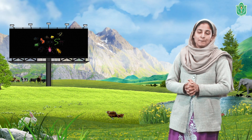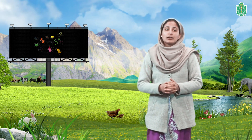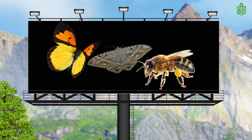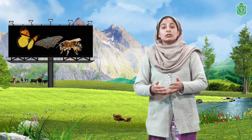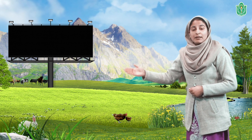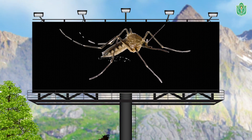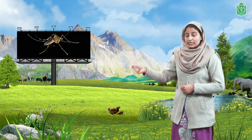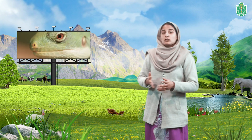Insects are the largest group of living organisms on earth, and different insects obtain food from different sources. Butterflies, moths, and bees suck nectar from flowers using straw-like mouthparts. Dragonflies eat other insects. Some insects, like mosquitoes, suck the blood of other animals using needle-like mouthparts. Flies thrive on garbage dumps, which become their breeding ground for growth and survival.